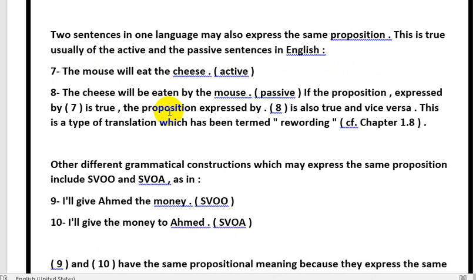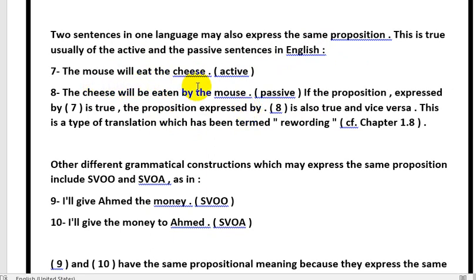Now we will talk about propositions in active and passive sentences — المبني للمعلوم والمبني للمجهول. Two sentences in one language may also express the same proposition; this is usually true of active and passive sentences in English. So in English, switching between active and passive will not change the meaning. For example: 'The mouse will eat the cheese.'